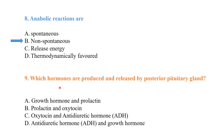Which hormones are produced and released by the posterior pituitary gland? This is a hormone chapter question. The posterior pituitary releases antidiuretic hormone (ADH).